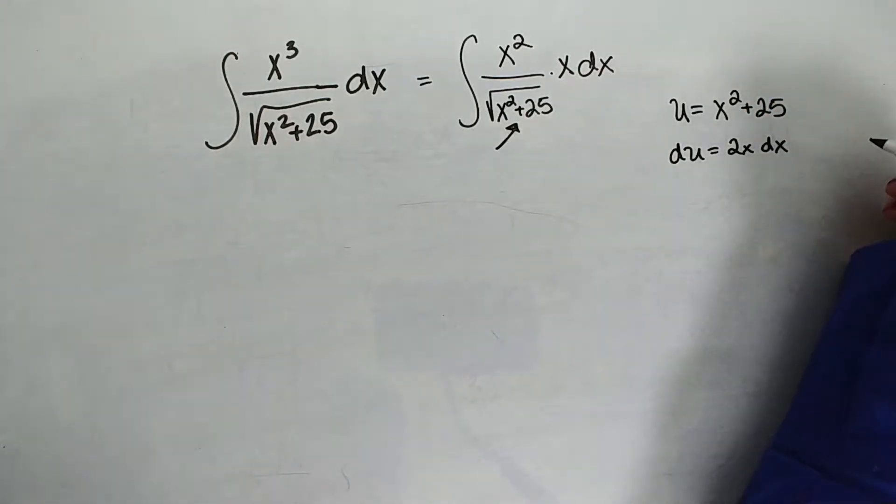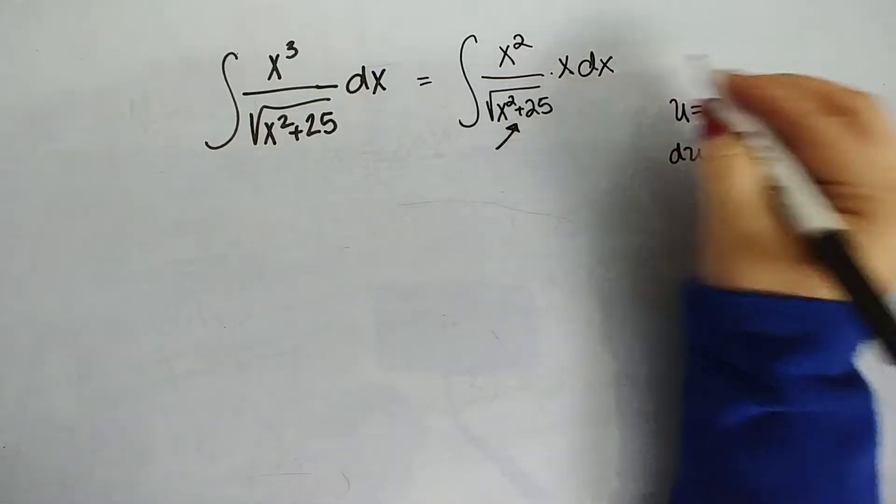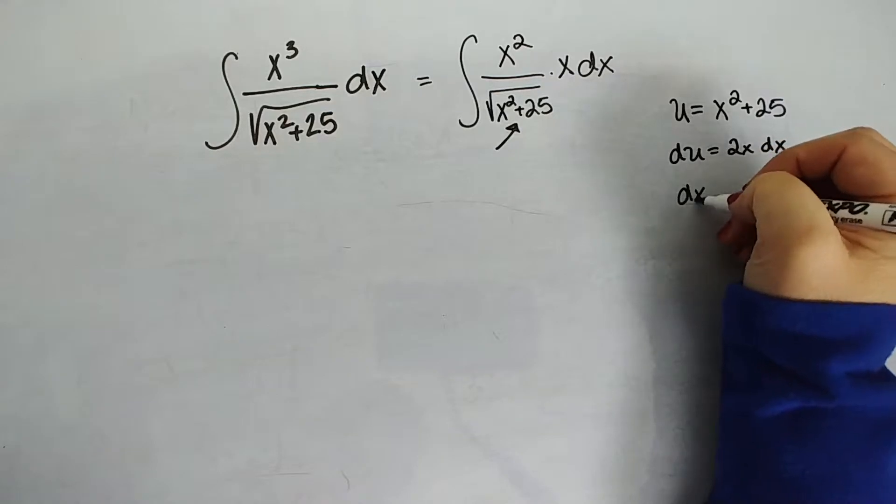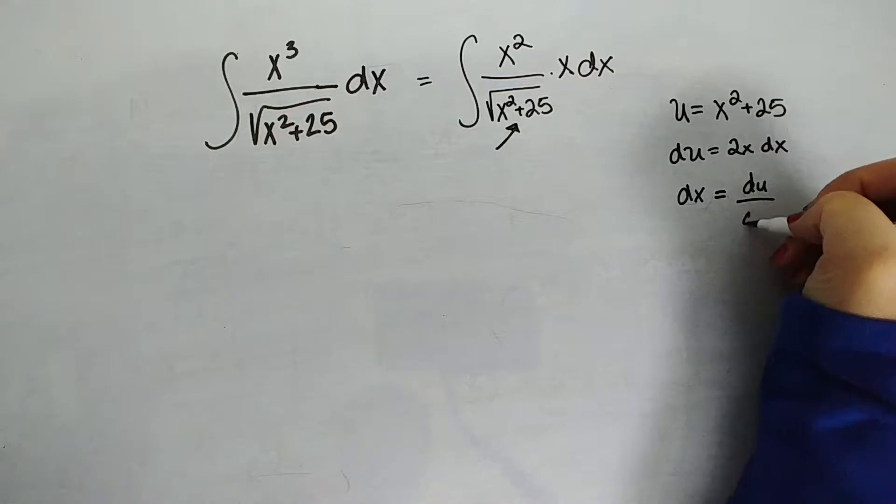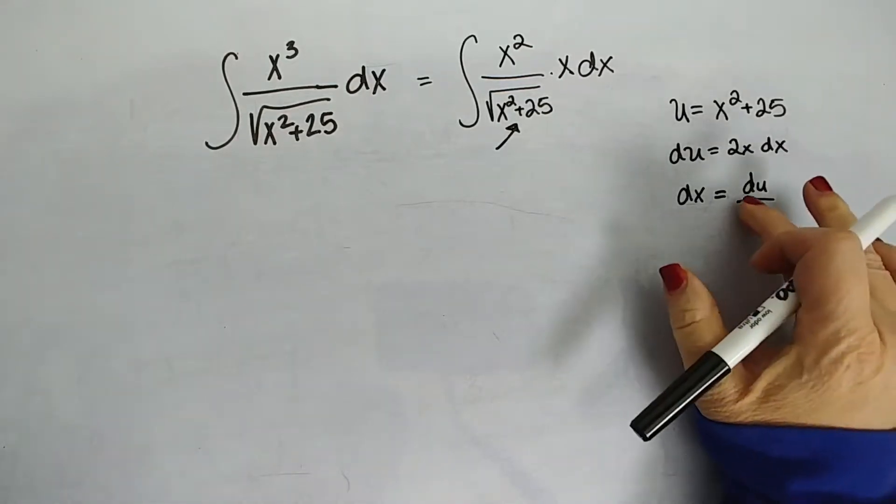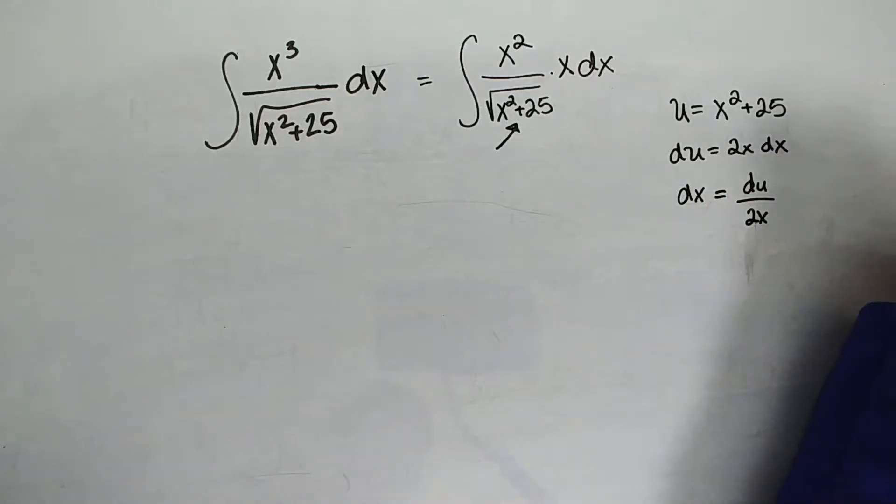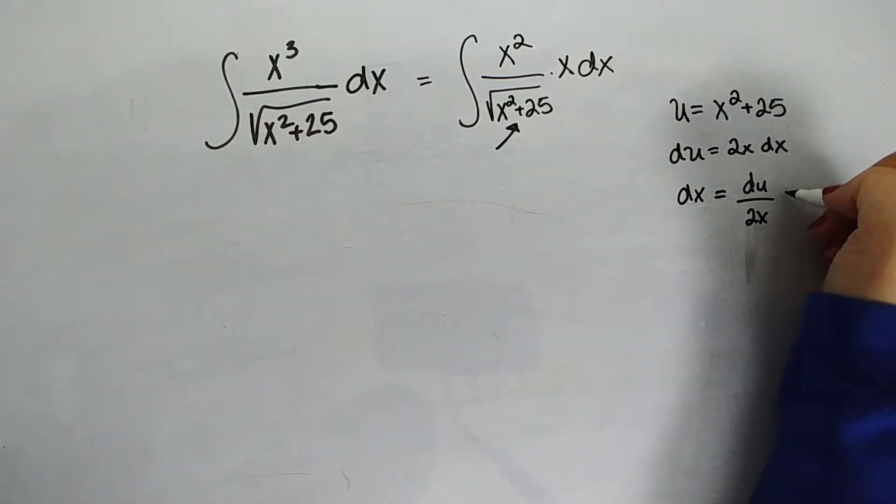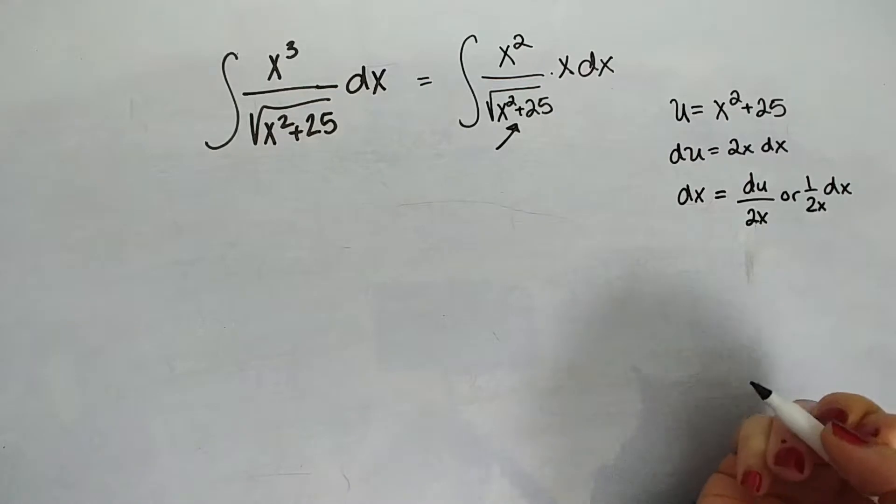Okay, and I might as well do this right now. I'm going to need dx. I don't have a 2x dx. So I need dx equals du over 2x. Or you could rewrite this as 1 over 2x dx. And that's going to be nice because my x's are going to cancel when I pop that in.